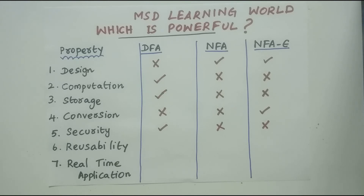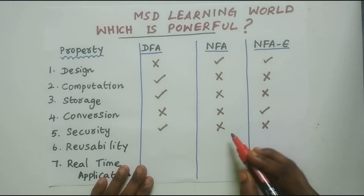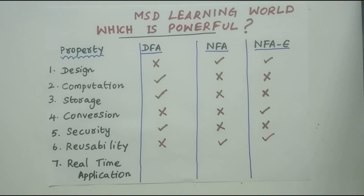Coming to property six — Reusability. Reusability is a very important factor when you want to do software versioning of any application. For reusability, NFA-epsilon is more powerful because it is easy to create any other automata from NFA-epsilon by reusing the same states with any number of transitions for the same input symbol. Whereas in DFA, you cannot extend the machine to have more transitions since only a single transition per input symbol is allowed. So NFA-epsilon and NFA are more powerful than DFA in terms of reusability.